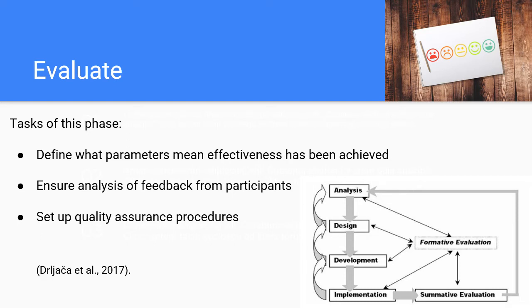This graphic in the bottom right illustrates how evaluation truly comes in all phases of the ADDIE model. We have formative evaluation for the first four phases — analysis, design, development, and implementation. And it is after implementation that we have a summative evaluation of the work done thus far. The beauty of the ADDIE model is this ease of ability to go back and assess and evaluate each of the individual steps.